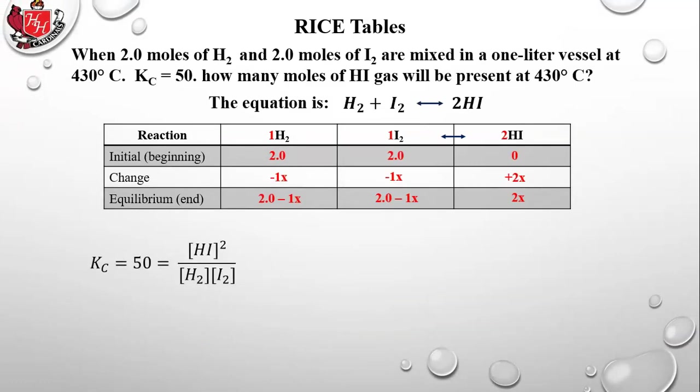Now we plug them into the law of mass action. The products are on top — the coefficient in front of HI is the exponent, which is 2. The reactants H2 and I2 are on the bottom with coefficients of 1, so the exponents are 1. The equilibrium constant is 50. We plug in: 2X squared on top, and (2 minus 1X) times (2 minus 1X) on the bottom.